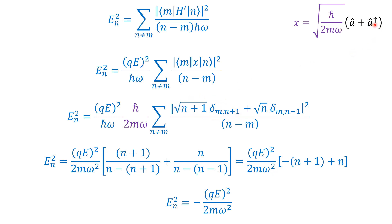For the creation operator A†, it increases the ket level by 1. So the ket must initially be |n-1⟩ for the inner product to survive orthonormality — A†|n-1⟩ = √n|n⟩. The coefficient is √n and the Kronecker delta is δ_{m, n-1}. Taking the modulus square of each gives N+1 and N respectively.